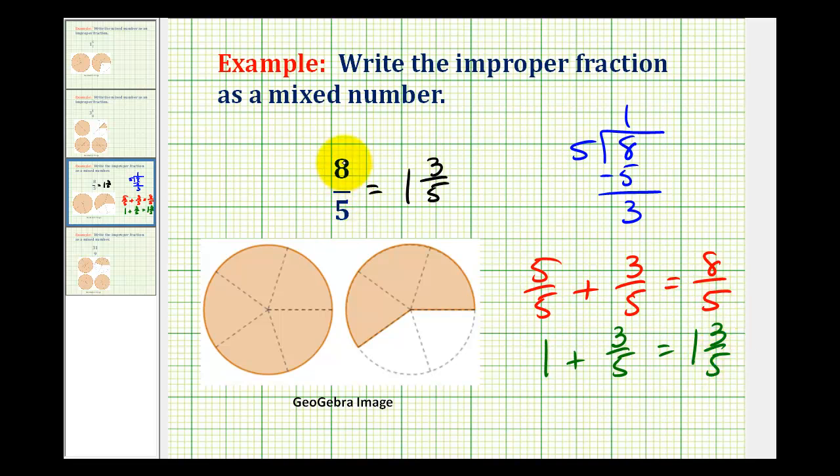So by dividing the numerator by the denominator, we first determine the whole number of the mixed number, and then the remainder tells us how many pieces are left over.